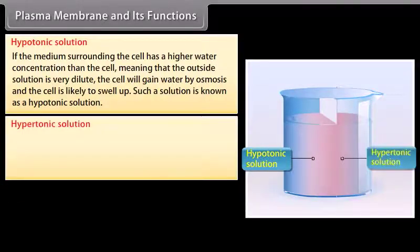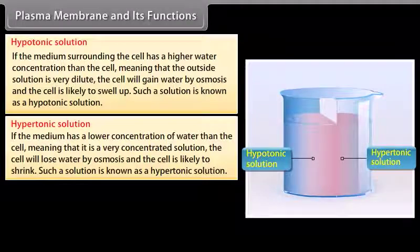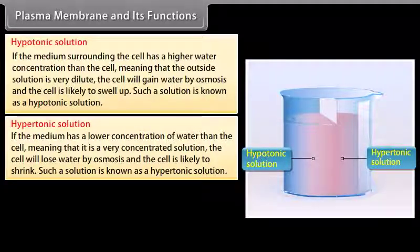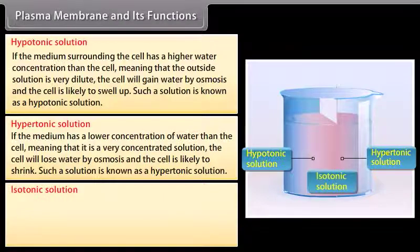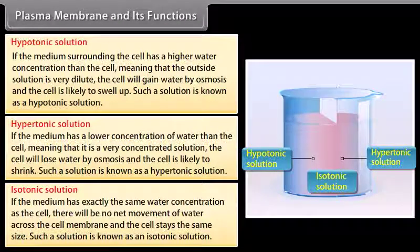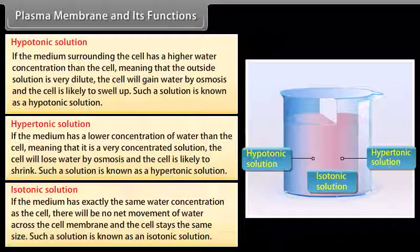In a hypertonic solution, the medium has a lower concentration of water than the cell, meaning it is a very concentrated solution. The cell will lose water by osmosis and is likely to shrink. In an isotonic solution, the medium has exactly the same water concentration as the cell, so there is no net movement of water across the cell membrane and the cell stays the same size.